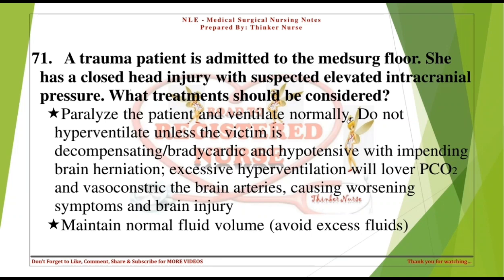A trauma patient is admitted to the med-surg floor with a closed head injury and suspected elevated intracranial pressure. What treatments should be considered? Paralyze the patient and ventilate normally. Do not hyperventilate unless the victim is decompensating or bradycardic and hypotensive with impending brain herniation. Excessive hyperventilation will lower PCO₂ and vasoconstrict the brain arteries, causing worsening symptoms and brain injury.